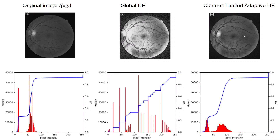So we can apply another method called contrast limited adaptive histogram equalization. Adaptive here means the histogram equalization is performed on small areas of the image — the image is divided into small sections. Here I divide the image into 8x8 pixel tiles and then apply histogram equalization on each 8x8 pixel region.